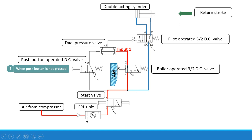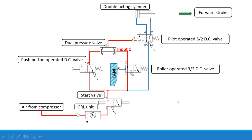Now we have to understand the circuit when the second input is provided. When we operate this particular push button, or when the push button is pressed, the left envelope mode will be present. Air from the compressor enters into the FRL unit — that is the filter, regulator and lubricator unit — then through the start valve. The cam is pressing this roller, so we are in left envelope mode, which is the open position, and the first input is provided to the dual pressure valve. Now when the push button is pressed, we get the left envelope mode.